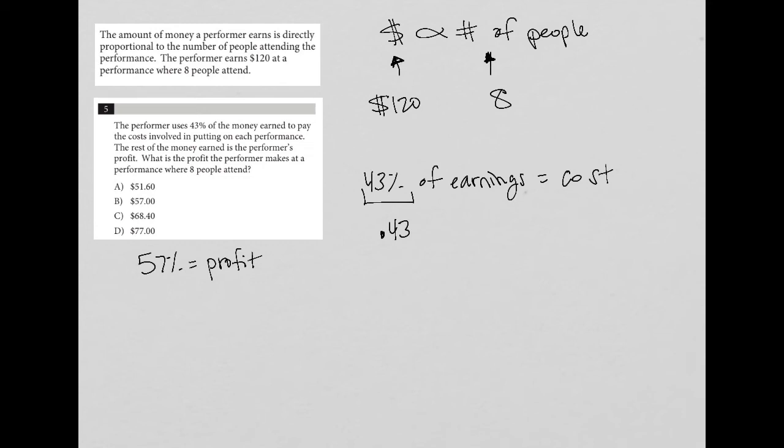What is the profit the performer makes at a performance where eight people attend? Well, we know from the question that when eight people attend, the performer makes $120. That $120, we know that from that $120, 57% of it is profit.